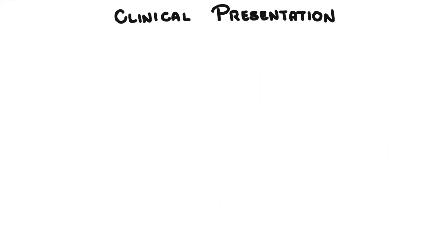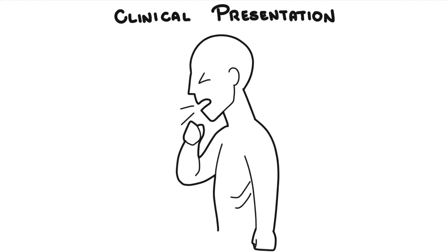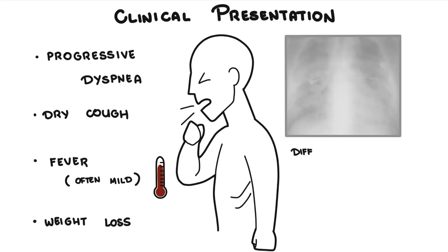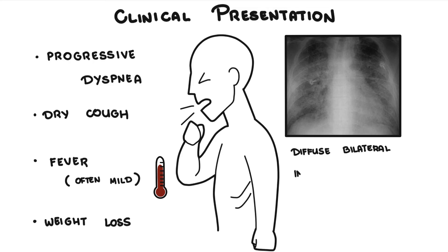The classic presentation of someone with Pneumocystis pneumonia can vary, but typically includes progressive dyspnea, dry cough, fever — which is often mild — weight loss, and diffuse bilateral interstitial infiltrates with ground glass changes on x-ray. Extrapulmonary manifestation of the fungus is rare, because these organisms love the lungs.